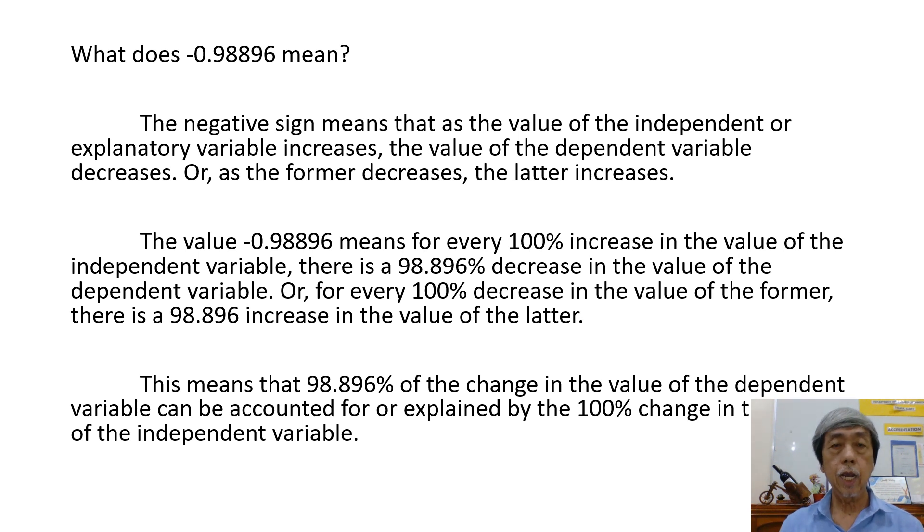What does negative 0.98896 mean? The negative sign means that as the value of the independent or explanatory variable increases, the value of the dependent variable decreases, or as the former decreases, the latter increases.